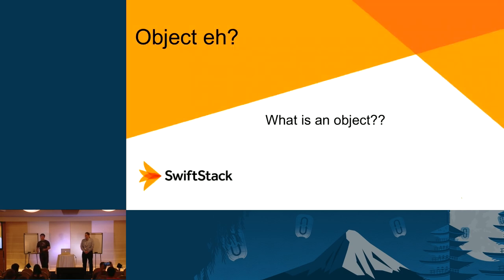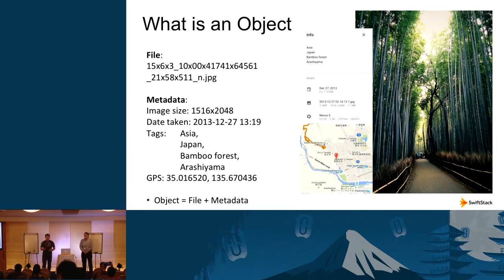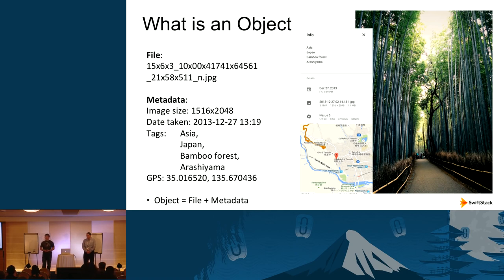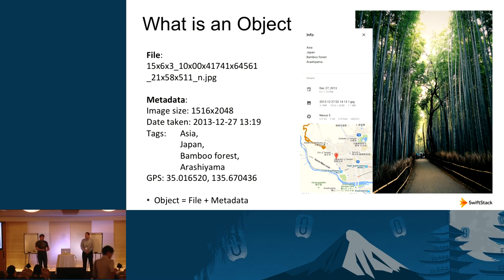So what is an object? An object consists of a piece of data plus its metadata. Here's a picture I took of the bamboo forest on my trip to Japan back in 2013. Along with the file name, it has the size of the picture, the date taken, extra tags I attached to it, and the GPS location from my phone. All this information combined with the actual picture itself makes up an object.